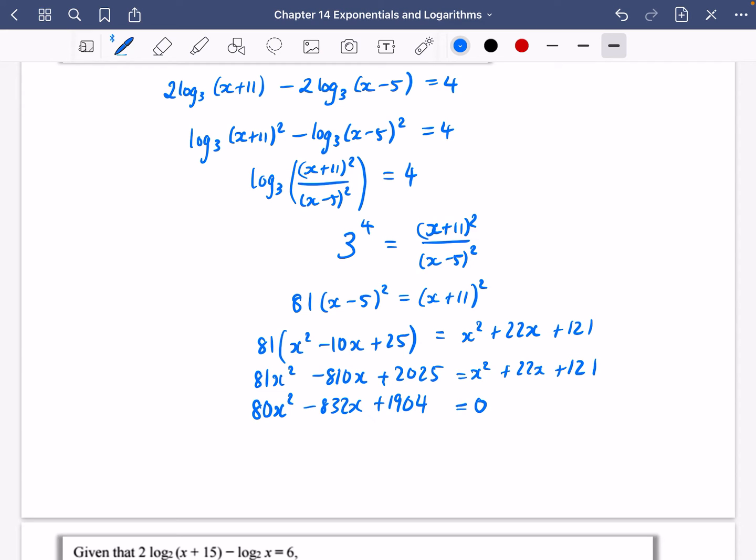So you're going to use your equation solver that you've got on your class whiz or your other calculator. I'm going to go to menu, equation and function. It is a polynomial of degree order 2. So that's 80, minus 832, and 1904. So we get that one of the solutions is that x is 7, and the other solution is that x is equal to 3.4. Yeah, we've just got those two solutions of x is 7 and x is 3.4.